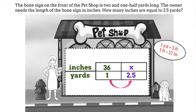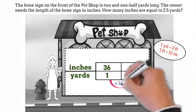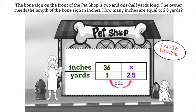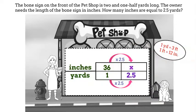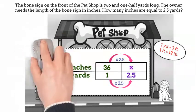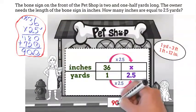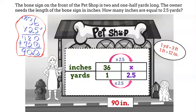Now think, what can we multiply 1 by to get 2.5? That's right, 2.5. We'll do the same thing to the numerator and we'll have our answer. Use pencil and paper to calculate 36 times 2.5. What did you get? That's right, it's 90. The bone sign is 90 inches long.